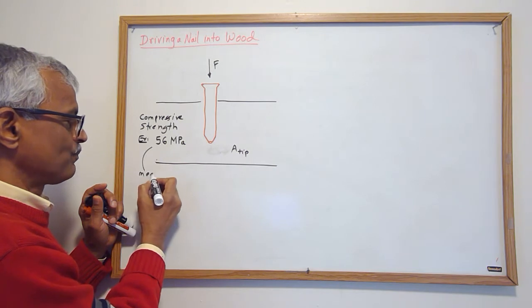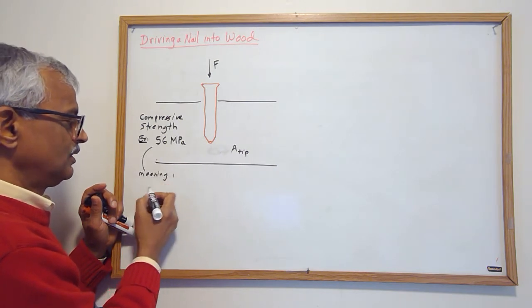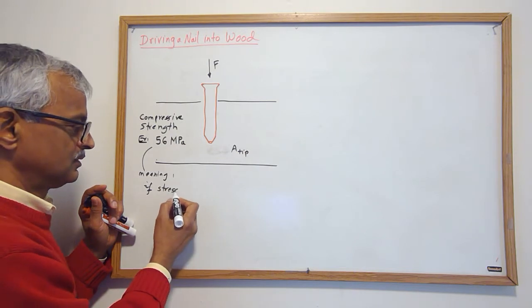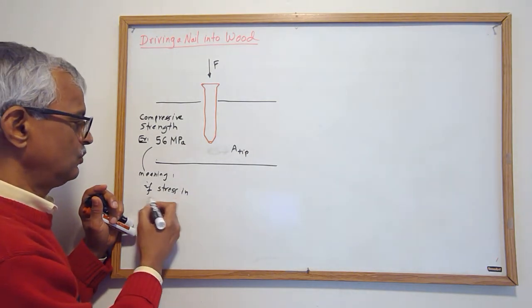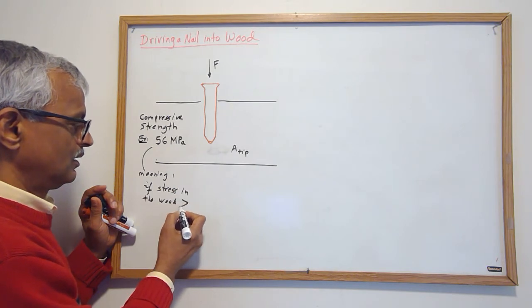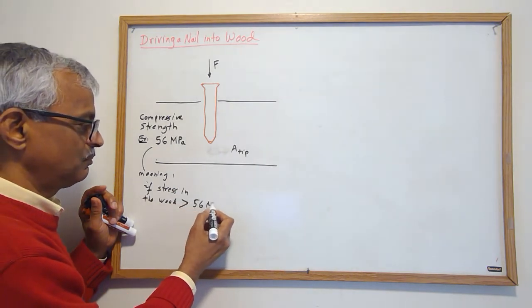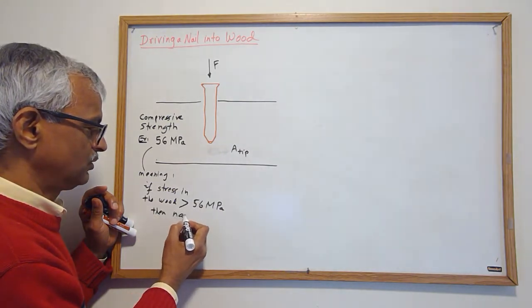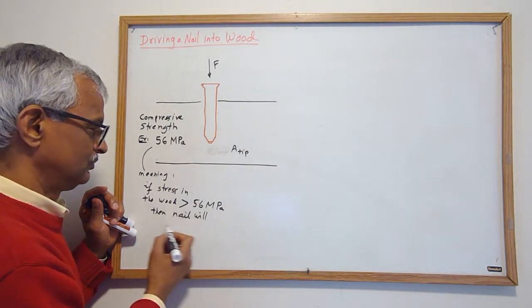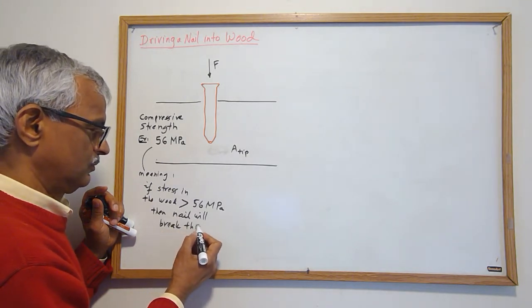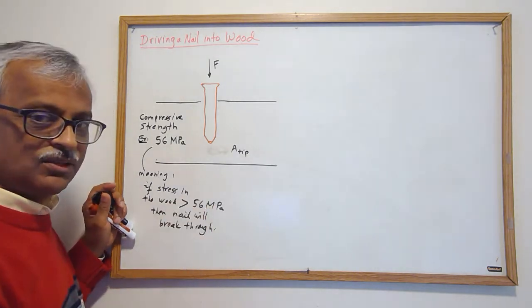So that's what the meaning of this is—if the stress in the wood is greater than 56 megapascals, then the nail will break through.